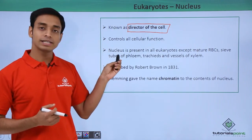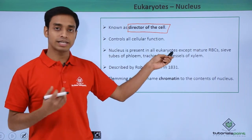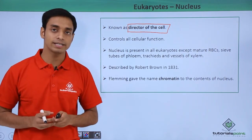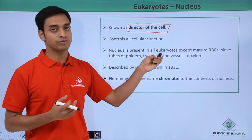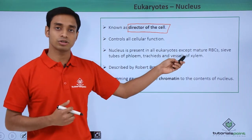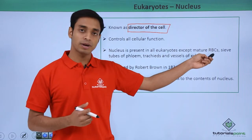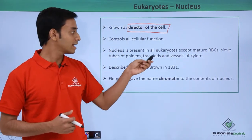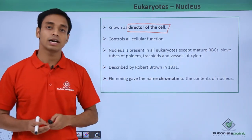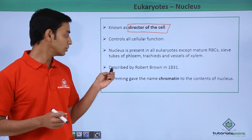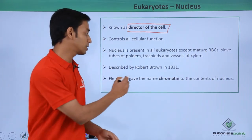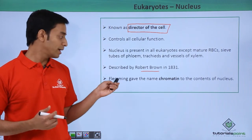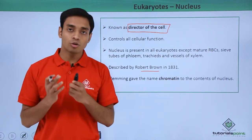Nucleus is present in eukaryotic cells. A membrane-bound nucleus is not present in prokaryotic cells — it is only present in eukaryotic cells. However, there are some exceptions: mature RBCs (red blood cells), sieve tubes of the phloem, tracheids, and vessels of the xylem — these cells do not have a proper nucleus. Nucleus was first described by scientist Robert Brown in 1831. Later, the scientist Flemming gave the name 'chromatin' to the contents present inside the nucleus.